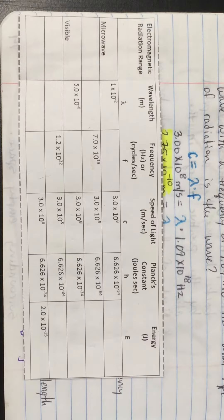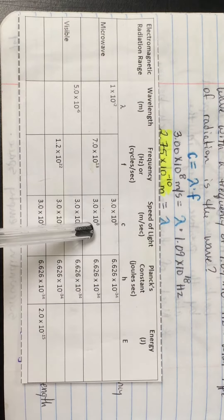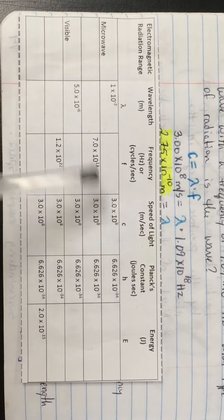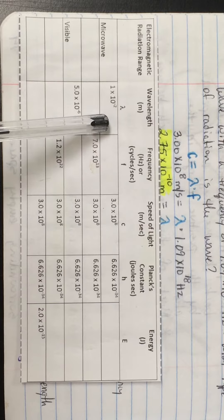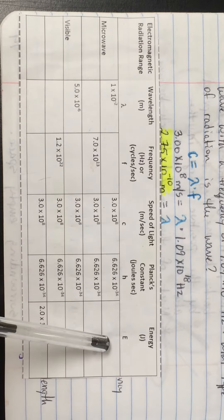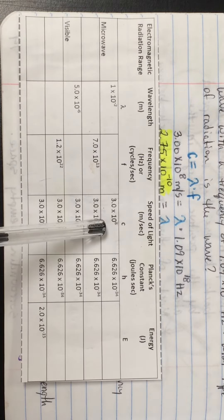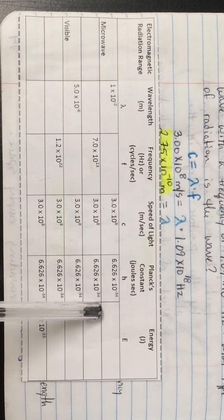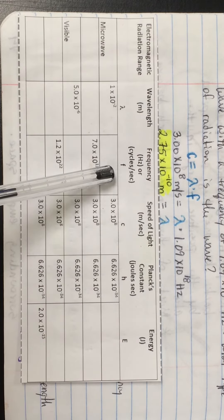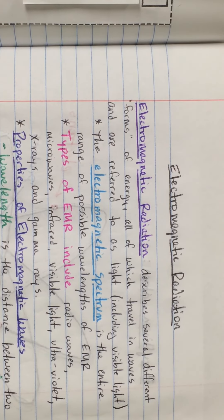The last thing for page 15 in your interactive notebook is to complete and glue in a table, which provides practice problems about electromagnetic radiation. For each row, you're given some information about a wave and use it to complete all the blanks. For example, in the first row you're provided with wavelength, speed of light, and Planck's constant, and expected to find the frequency and the energy. Find frequency using c is equal to lambda times f, then use E is equal to H times f to calculate energy. Complete that table and you'll be done with page 15.